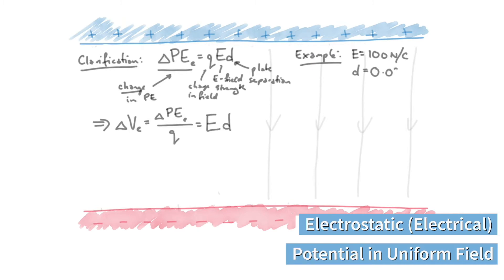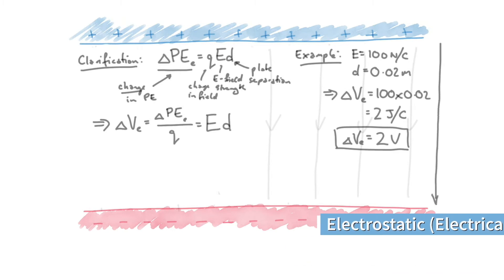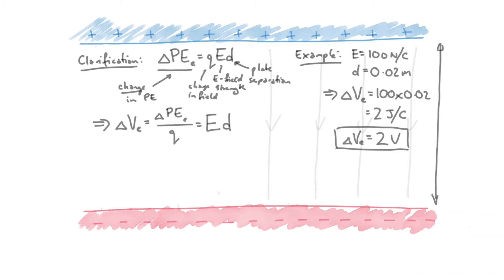It's quite a simple formula. If we had an electric field strength of 100 newtons per coulomb and a separation of two centimetres (0.02 metres), the potential difference delta V would be 100 times 0.02, which is 2 joules per coulomb. This is the same as 2 volts. So the potential difference — the voltage — is 2 volts between those plates. If you increase the separation or the electric field, you increase the potential difference.